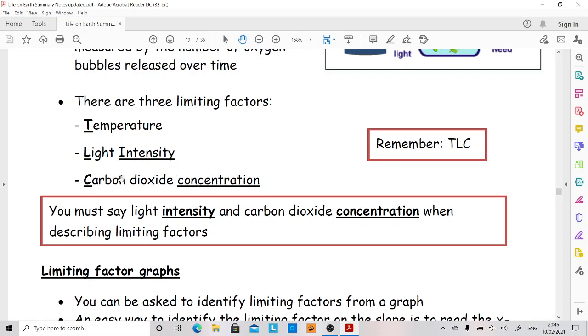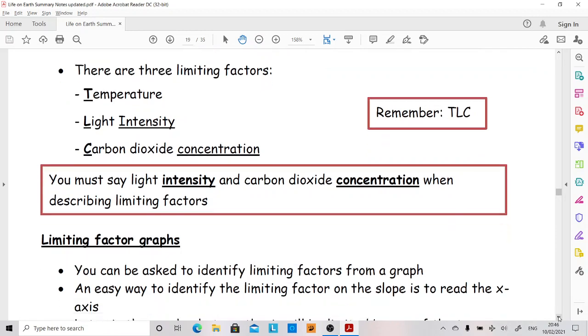It's really important that you use these correctly. For example, if you say carbon dioxide is the limiting factor, you don't get the mark. It's carbon dioxide concentration. If you say light is the limiting factor, you won't get the mark. It's light intensity. That's what that red box is saying. Pay attention. Write it out properly.